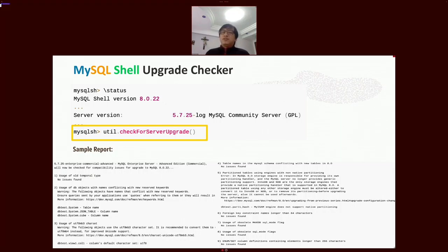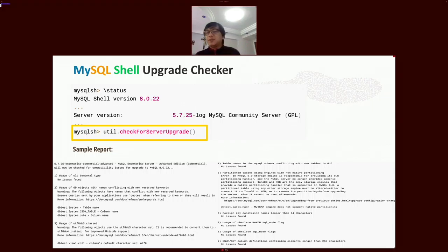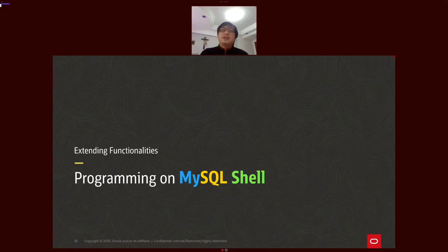You can use the Admin API for production or sandbox deployments to test before committing to full production. The upgrade checker utility verifies whether a MySQL server instance is ready for upgrade, automatically checking the specified target release and advising on further manual checks. It can also check configuration files. You log in to the source database via X Protocol or classic protocol with a user having RELOAD, PROCESS, and SELECT privileges, then run the upgrade check and review the findings before proceeding.